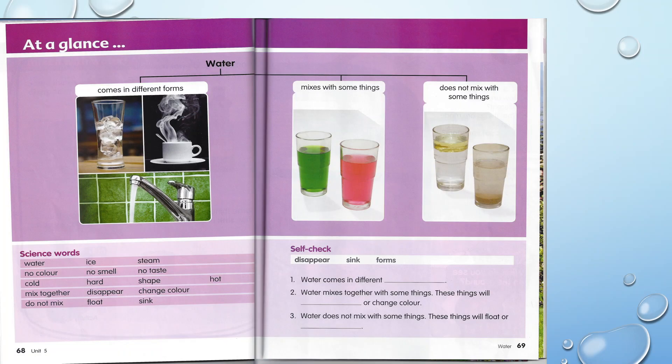Let's go back to the student book. If you open your student book on pages 68 and 69, you have the at-a-glance section, and here we have these ideas: water comes in different forms; water mixes with some things and does not mix with some other things. Let's check the science words: water, no color, cold, mixed together, do not mix, ice, no smell, heat, disappear, float, steam, no taste, shape, change color, sink, and hot. Lots of words, but you already know most of these. So pay attention to: mix together, do not mix, and change color.